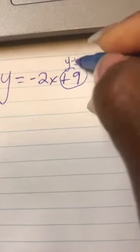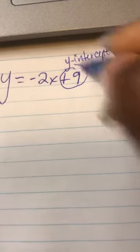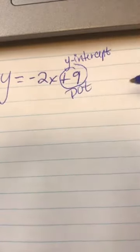So here, I'm going to circle plus 9. This is our y-intercept. Write the word dot because that's where you're going to place your dot.